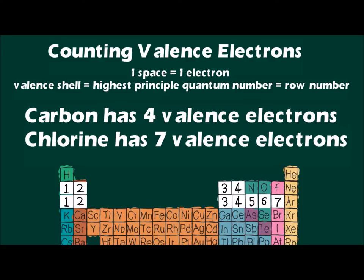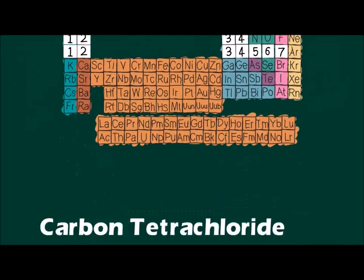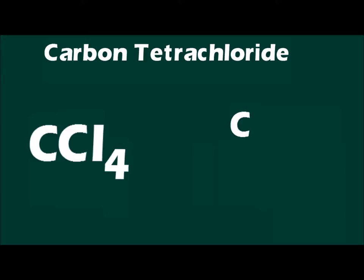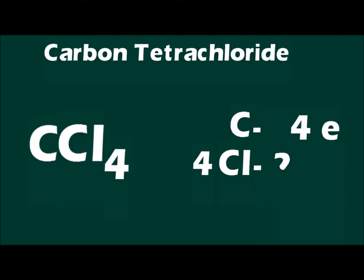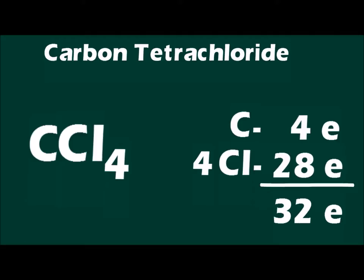For our example, carbon has four valence electrons, and chlorine has seven valence electrons. The molecule carbon tetrachloride has four chlorine atoms and one carbon atom, and therefore the molecule has 32 valence electrons — four from carbon and seven from each of the four chlorine atoms.